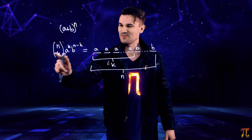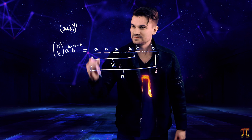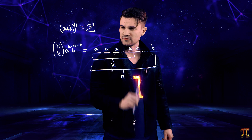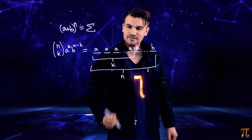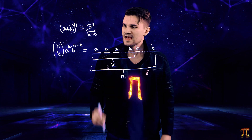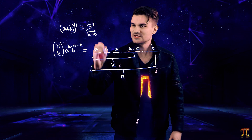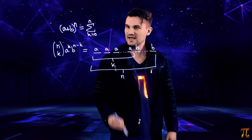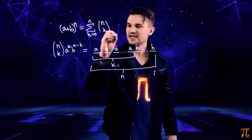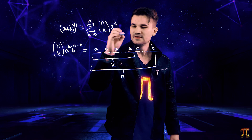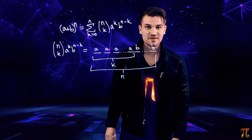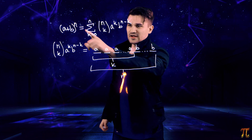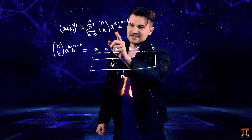And so all we need to do is sum up all of these as k ranges. What is the range of k? Well, k can be zero — when k is zero, that's the term b to the n. And k can be n — that's the term a to the n. So we have k going from zero to n, and we're summing up n choose k times a to the k times b to the n minus k. And that is the binomial formula. It's just saying: add up all the strings of length equal to the exponent, consisting of your terms.